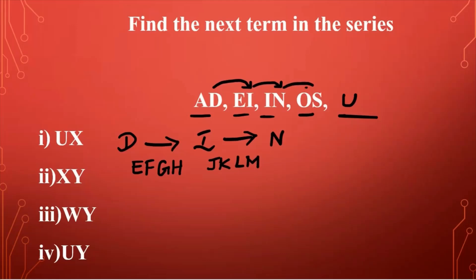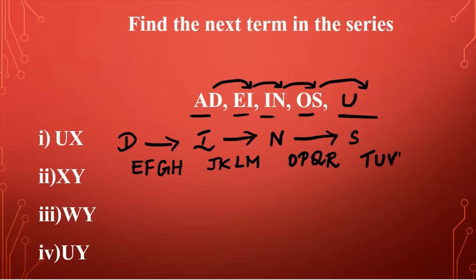Now between N and S: after N comes O, P, Q, and R — four letters. There are four letters between each of the second letters of the terms. Which means after S there have to be four letters: T, U, V, W. The second letter in the last term should be the letter after W, which is X. So our answer is U, X.